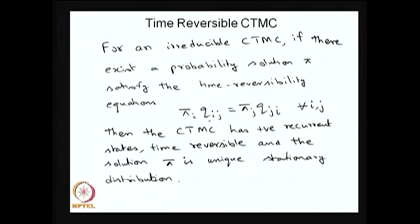The q's are nothing but the rates and the π's are nothing but the probability values. If the stationary probability or stationary distribution exists, and the time reversibility is satisfied by the CTMC, then that CTMC is positive recurrent and we can say that it is time reversible, and the solution π is the stationary distribution.